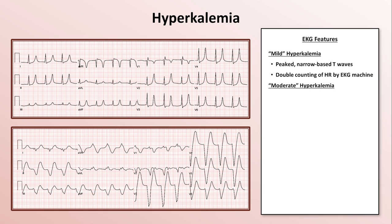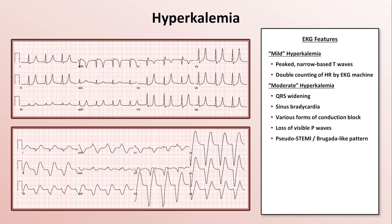As hyperkalemia worsens, the QRS complex widens, and patients can end up with sinus bradycardia, various forms of conduction block including AV block and bundle branch blocks, and there can be a loss of visible P waves. An underappreciated phenomenon is hyperkalemia leading to a pseudoSTEMI or Brugada-like pattern in which the EKG shows prominent ST elevations in V1 and V2. And when the potassium level is critically high, one can develop a sinoventricular rhythm in which the sinus node is still firing and conducting to the AV node via internodal pathways, but the atria themselves may depolarize so late that P waves become buried within the wide and bizarre QRS complexes, or alternatively the atria don't depolarize at all.